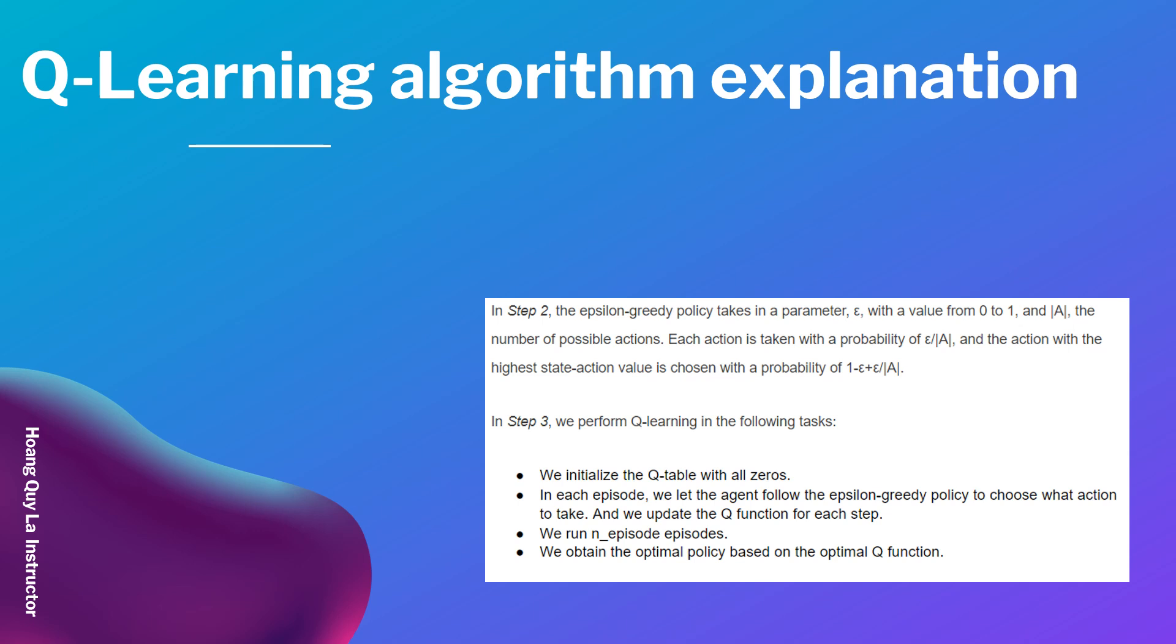In step 3 we perform the Q-Learning in the following tasks. First, we initialize the Q-table with all zeros. In each episode we let the agent follow the epsilon-greedy policy to choose what action to take, then we update the Q function for each step. We run n_episode episodes and then we obtain the optimal policy based on the optimal Q function.